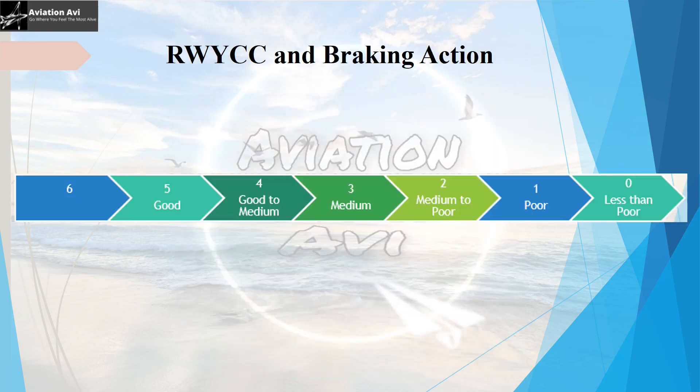To summarize the correlation between runway condition code and braking action: if the runway condition code is 5, braking action is good; code 4, braking action is good to medium; code 3, braking action is medium; code 2, braking action is medium to poor; code 1, braking action is poor; and when the runway condition code is 0, the braking action is less than poor.